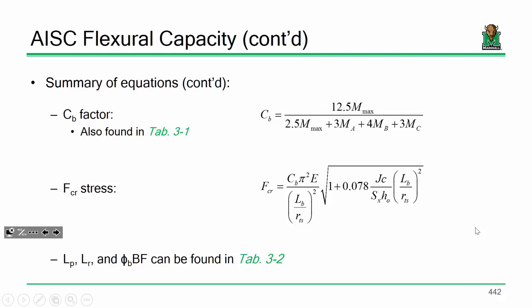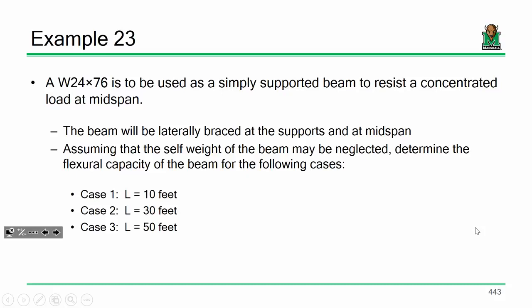You're just going to have to grunt through your C sub B calculation. F_critical is shown, and all the appropriate LTB expressions or constants are in table 3.2.